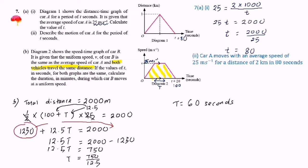The unit is in seconds because the speed is in metres per second. However, the question asks for the answer in minutes, so we convert: 60 seconds equals 1 minute. Therefore, T equals 1 minute.